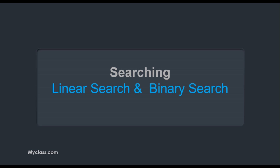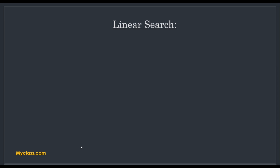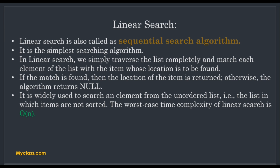Welcome back to myclass.com. Our topic is linear search and binary search - two searching techniques and their algorithms. Let's start by discussing linear search first. Linear search is also called sequential search algorithm, where we search for an item in a sequential manner. It is the simplest searching algorithm.